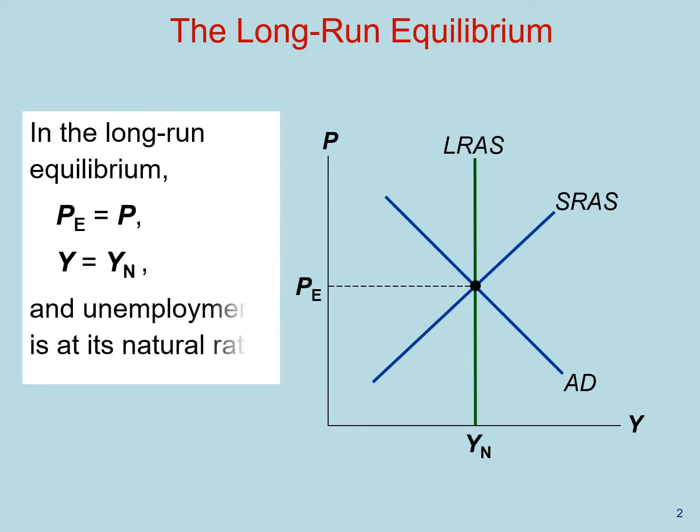The starting point in the analysis of short-run fluctuations is in the long-run equilibrium. In the long-run equilibrium, price expectations are equal to the current level of prices. Short-run and long-run output are equal to each other, and unemployment is at its natural rate. The economic event you will want to analyze will move the short-run equilibrium away from its long-run counterpart.